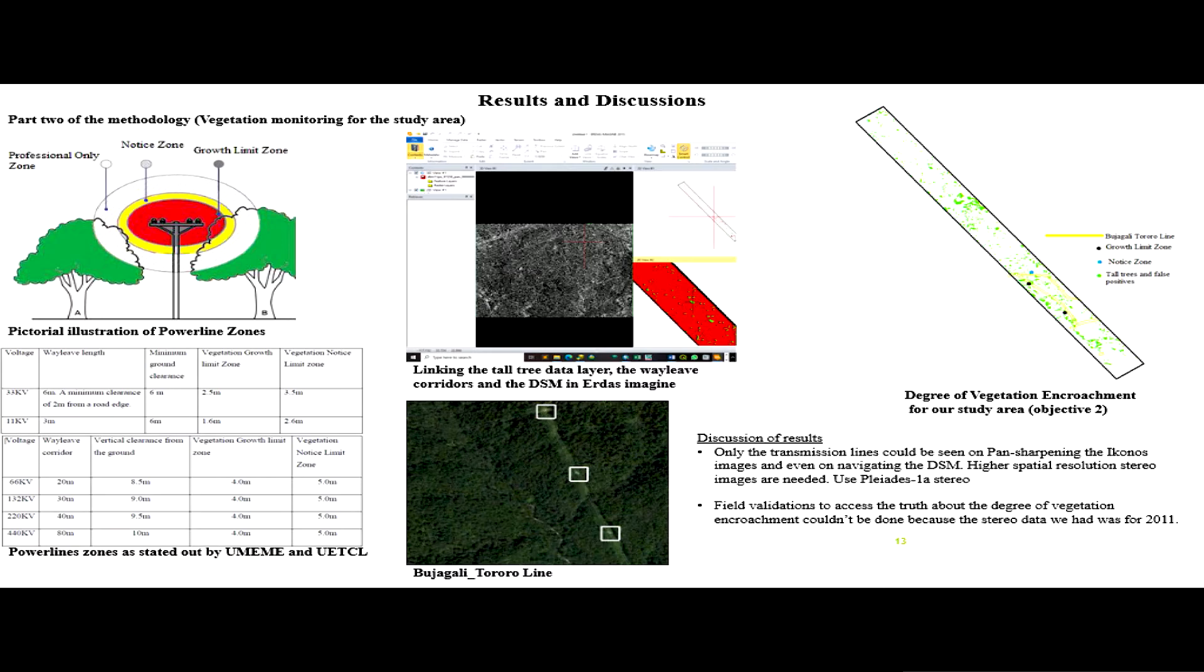I wasn't able to see the distribution lines because they are smaller—the line spacing is smaller than the one meter resolution of the IKONOS data I was using. But are you seeing that? Just here, Jinja-Tororo line. That's the way I was seeing it.